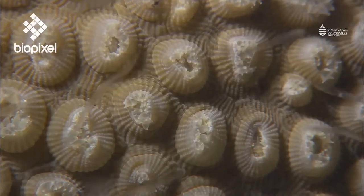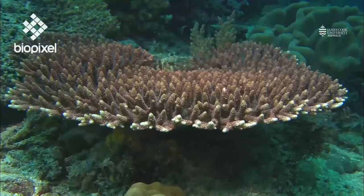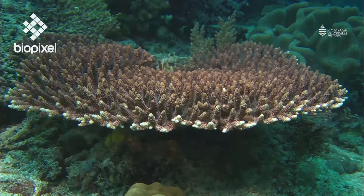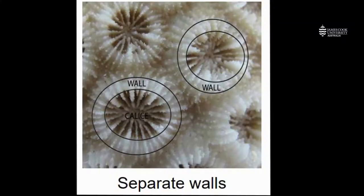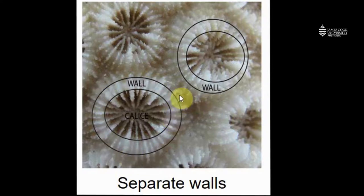There are lots of different ways that polyps can be joined together in many different corallite structures. In this example, we can see corallites with separate walls. We have our corallite opening, or calus, surrounded by a wall, and a gap between the walls of the adjacent corallites.